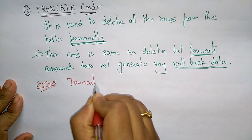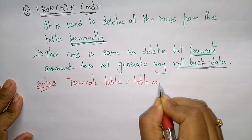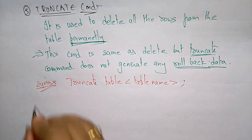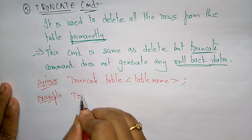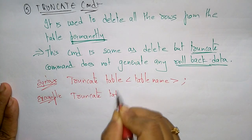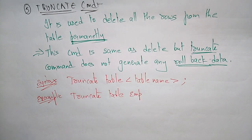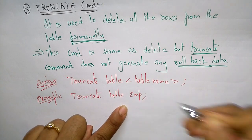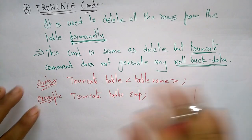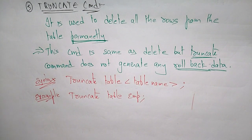The syntax for the TRUNCATE command is: TRUNCATE TABLE table_name. Example: TRUNCATE TABLE emp. Previously I renamed the employee table to emp, so now I write TRUNCATE TABLE emp. Whatever data is present in that table will be deleted permanently. This is about the Data Definition Language commands. Thank you.